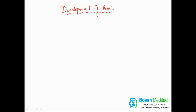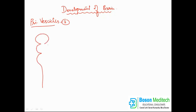When you study about the development of the brain, initially the brain will have primary vesicles, and there will be totally three primary vesicles. Those primary vesicles will be: the prosencephalon, the mesencephalon, and the rhombencephalon.